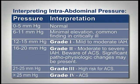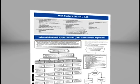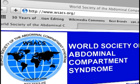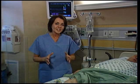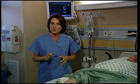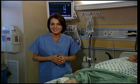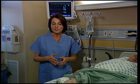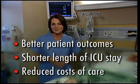Many institutions have adopted nursing protocols and treatment algorithms for intra-abdominal hypertension. If your institution does not have a protocol or algorithm, you can obtain them, as well as clinical information, by visiting the World Society of Abdominal Compartment Syndrome website at www.wsacs.org. By monitoring all high-risk patients early and often, you will be able to detect intra-abdominal hypertension before the patient develops abdominal compartment syndrome, allowing you to intervene with medical or surgical interventions. The results will be better patient outcomes, shorter ICU length of stay, and reduced cost of care.